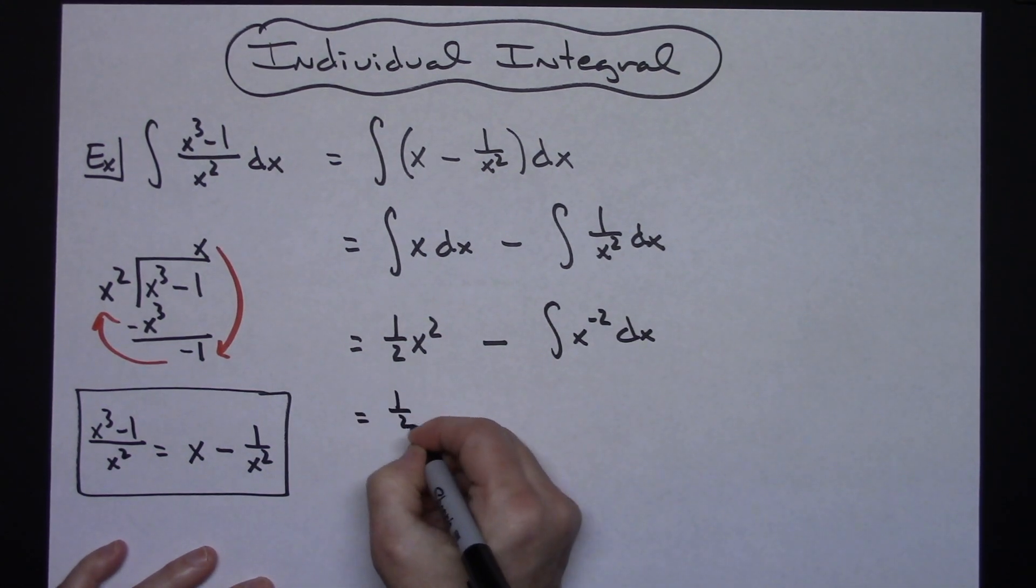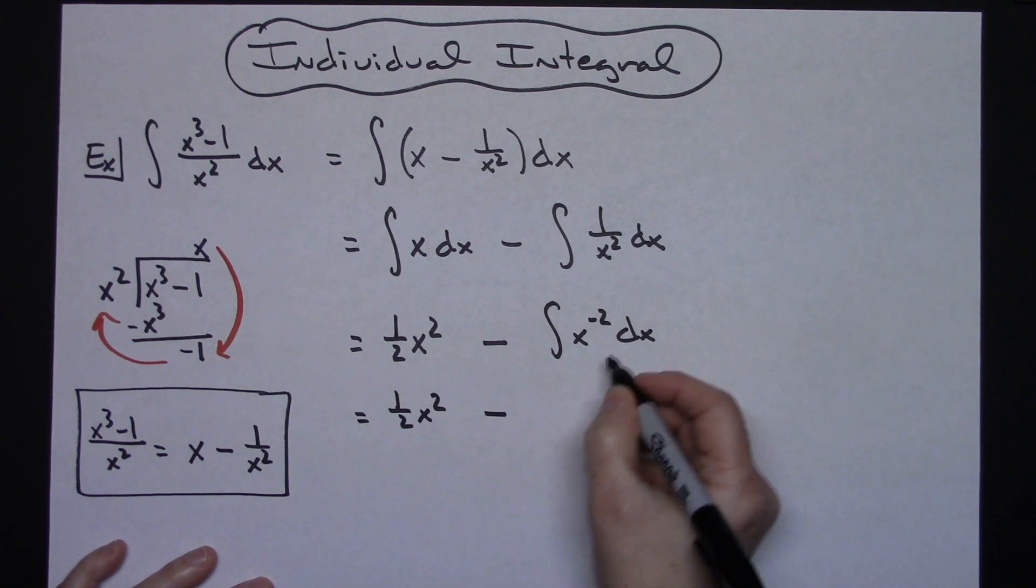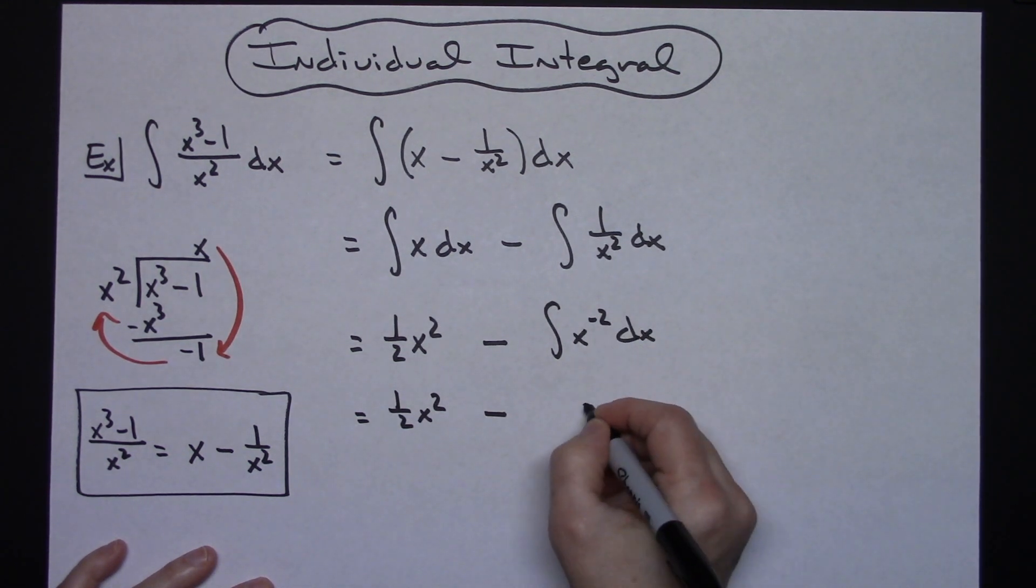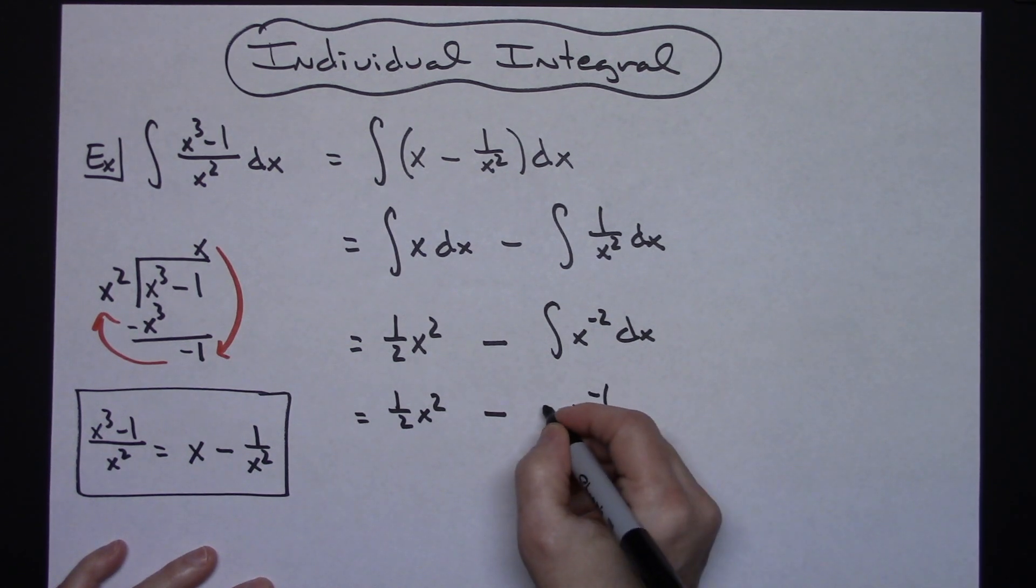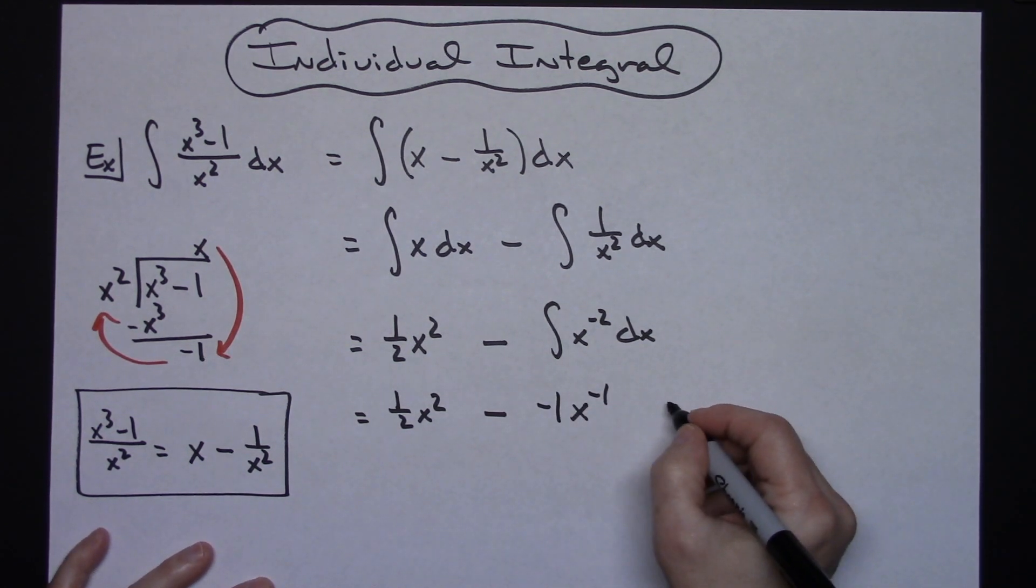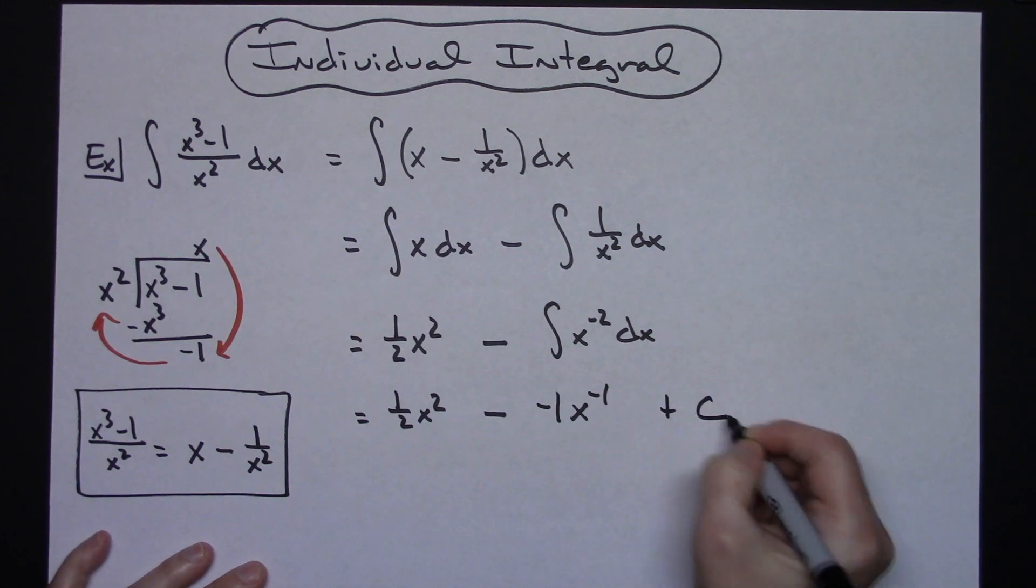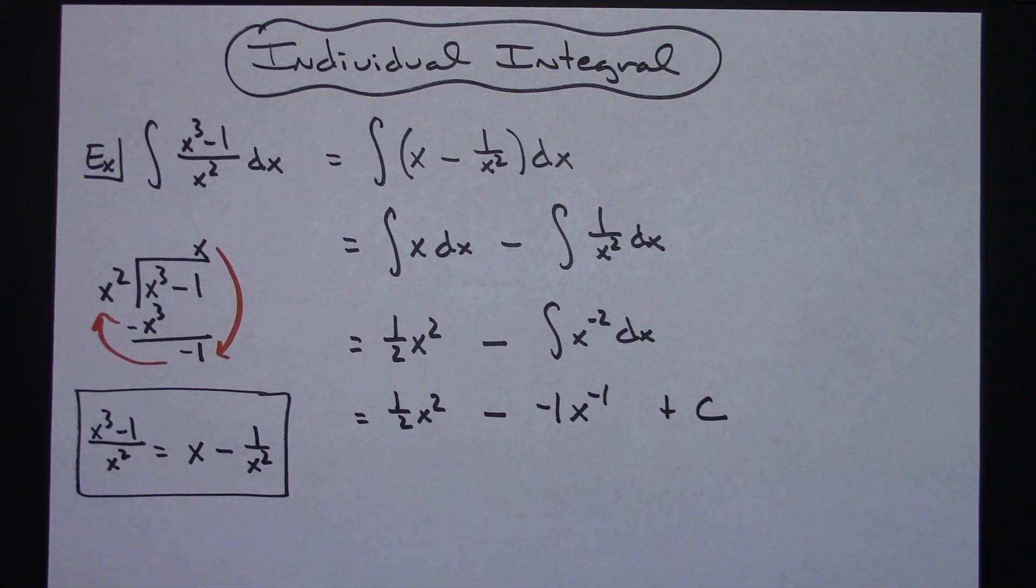The 1 half x squared is just going to stay. Integrating here, if I add 1 to that exponent I'll have x to the minus 1 and then down in front a minus 1. At this point I've fully integrated, so I can throw in the plus C and I just want to clean this answer up a little bit.